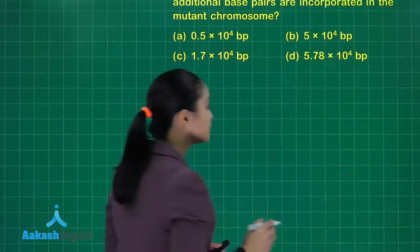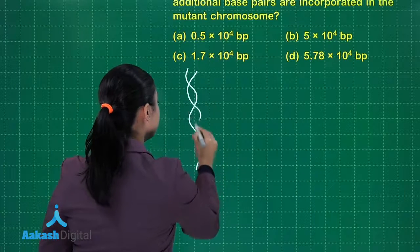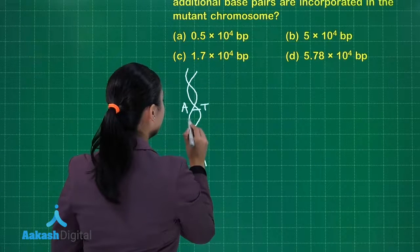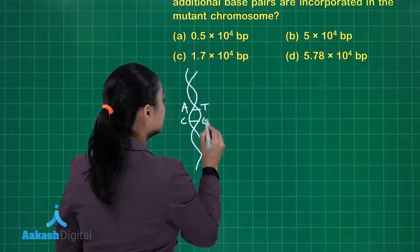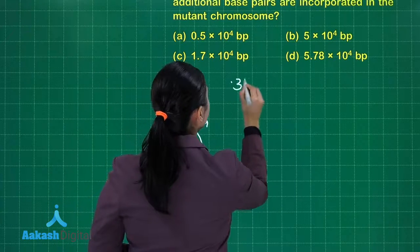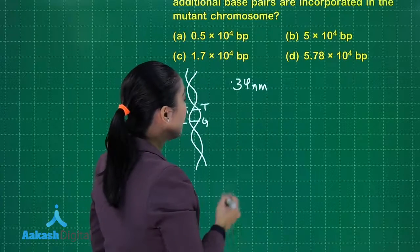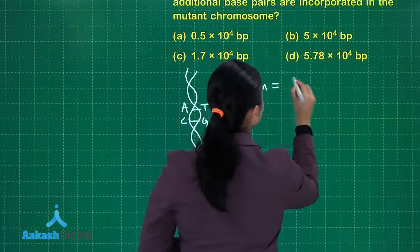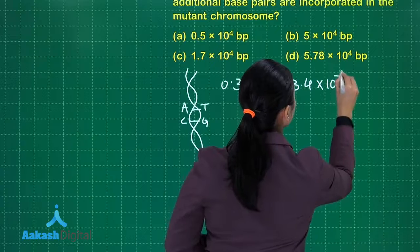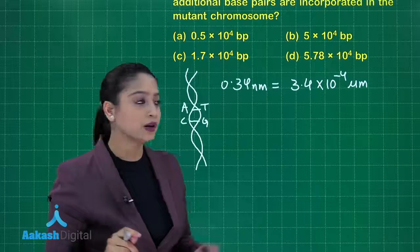If this is DNA, the distance between two base pairs — for example, AT is one base pair and CG is another — the distance between two base pairs is 0.34 nanometers, which if we convert into micrometers comes out to be 3.4 × 10⁻⁴ micrometers.